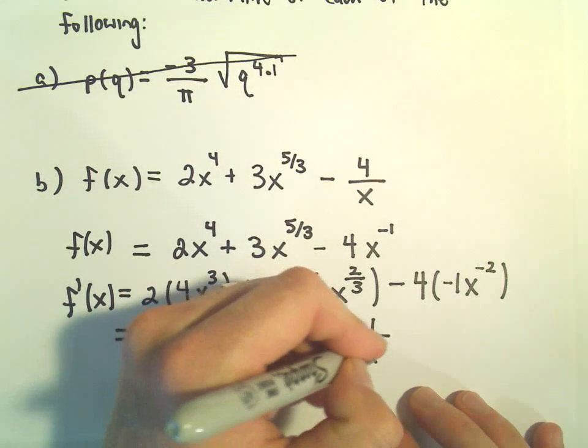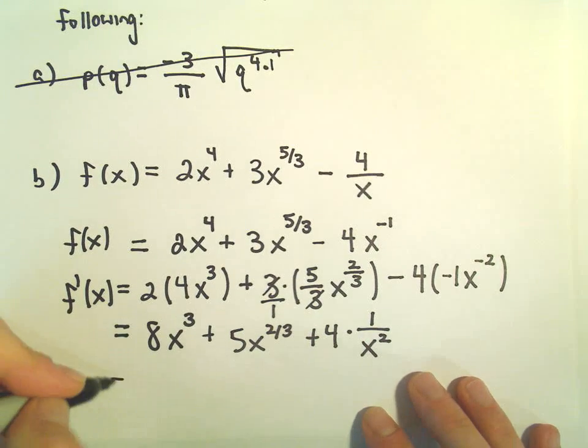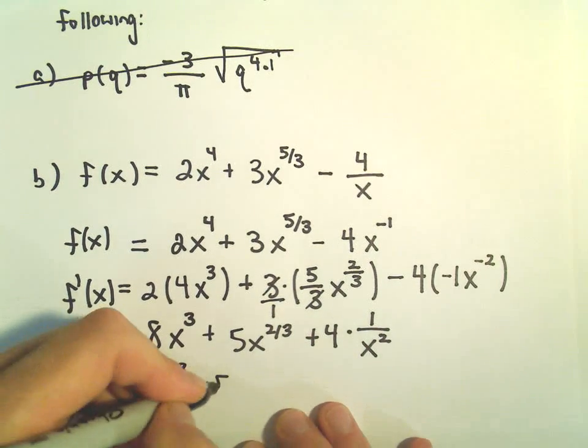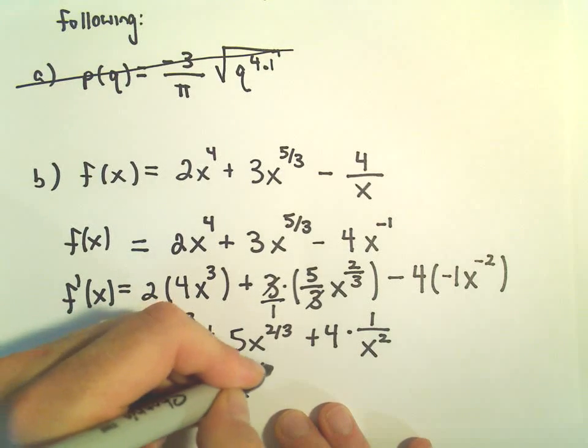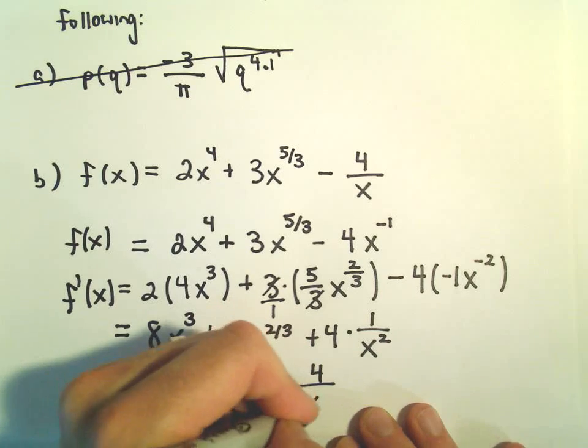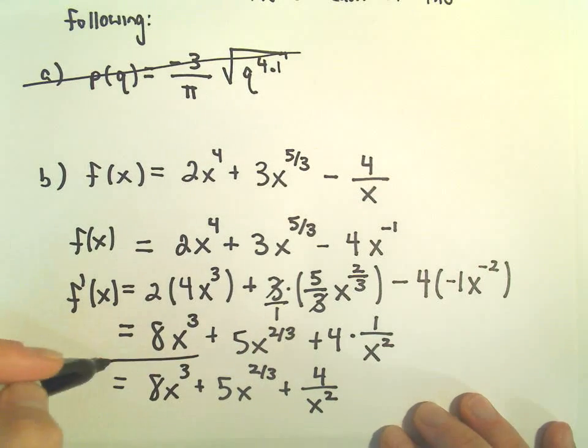we could rewrite that as 1 over x to the positive 2nd. So just one more time, we could write this as 8x to the 3rd plus 5x to the 2 3rds. And then we could write this as positive 4 over x squared. And now we have our derivative.